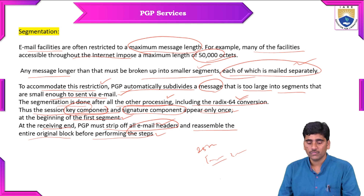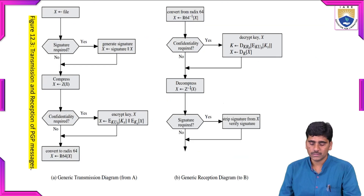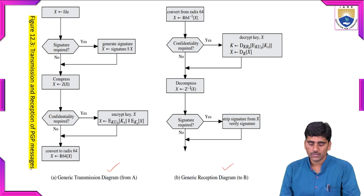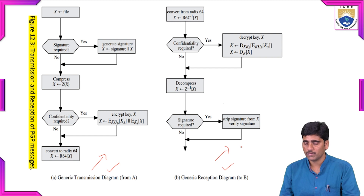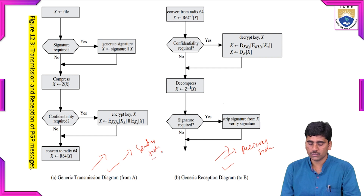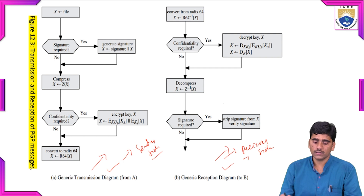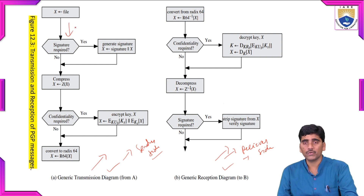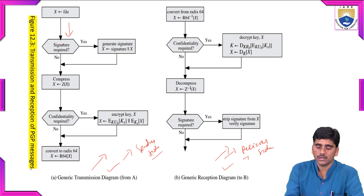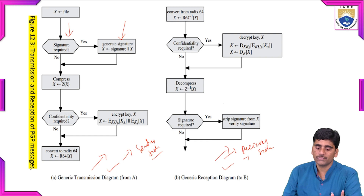Here is the generic transmission and reception diagram showing how mail is transferred to the receiver. At the sender side, the file to be attached to the mail — if it requires a signature — is signed using digital signature techniques. If not required, it is processed directly. After signing, the file is compressed. After compression, if confidentiality is required, encryption keys are applied.